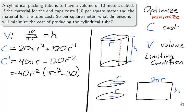The radius cannot be 0, as the volume would be 0 and not 10, so the only critical number for C is found when the derivative is 0. r is equal to the cube root of 30 over π.